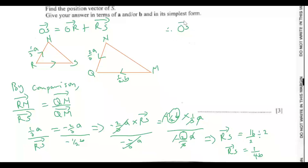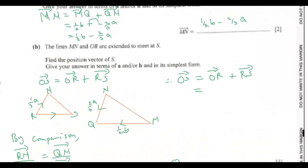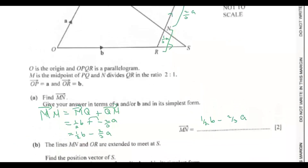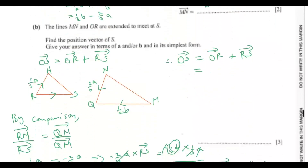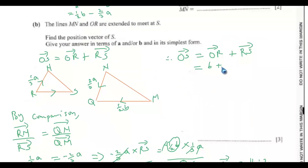Therefore vector OS equals (5/4)B. That is the position vector of S in terms of B.